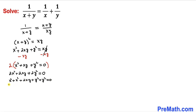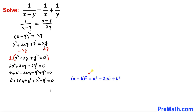Let me rearrange: I'm going to group x squared plus 2xy plus y squared together, and then write plus x squared plus y squared equals 0. Now applying the identity (a plus b) squared again, this becomes (x plus y) whole squared plus x squared plus y squared equals 0.